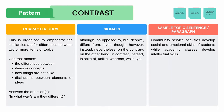Let's proceed to Contrast. Contrast means the difference between items or concepts — how things are not alike, and the distinction between elements or ideas. It answers the question: In what ways are they different? Here is an example: Community service activities develop social and emotional skills of students, while academic classes develop intellectual skills. Do you see any signal words that tell you the example is a contrast? Pause the video and find out.